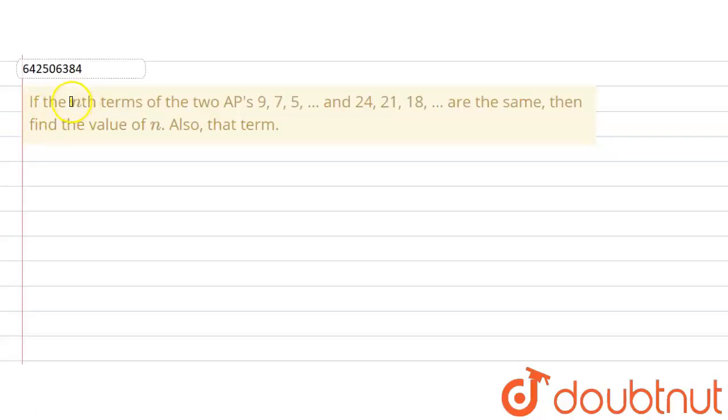The given question says that if the nth terms of two APs... So there are two APs. One AP is 9, 7, 5,